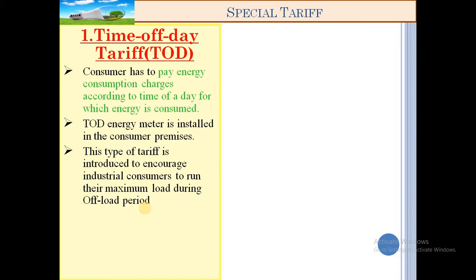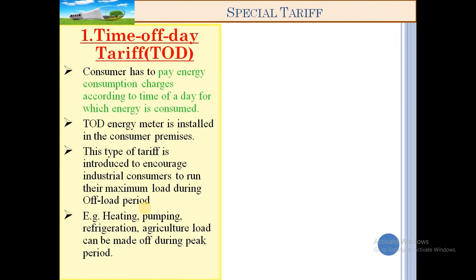The consumer load can be shifted to off-peak period when electricity demand is low, and they can get a discount per unit of charges. In the off-peak period, power generation demand is low. For example, at night, the amount of residential load is low and commercial load is also low. In the off-peak period, when electricity demand is low, consumers using electricity in that period will be charged at a lower rate per unit, or per kWh.